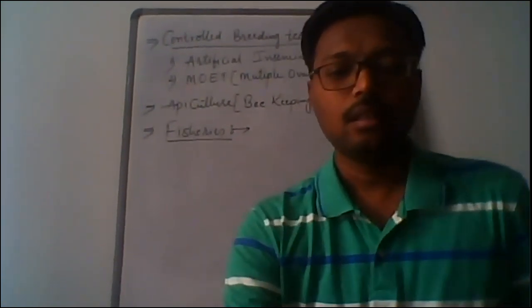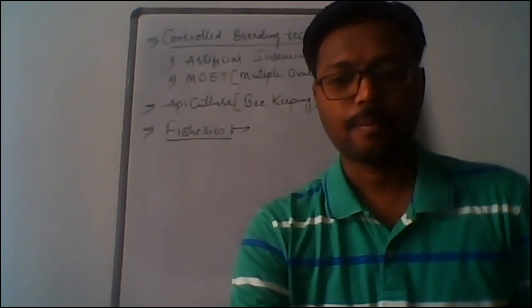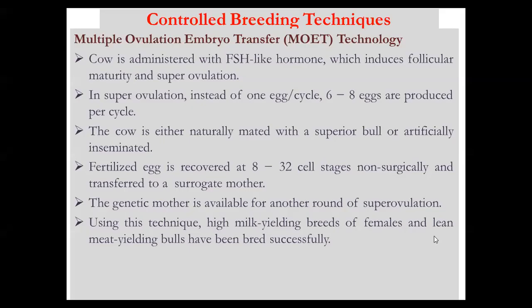In the MOET process, the cow is administered with FSH-like hormones which induce follicular maturity and super ovulation. In super ovulation, instead of one egg per cycle, six to eight eggs are produced. After super ovulation, the cow is either naturally mated with superior bulls or artificially inseminated — there is no difference between the two approaches.